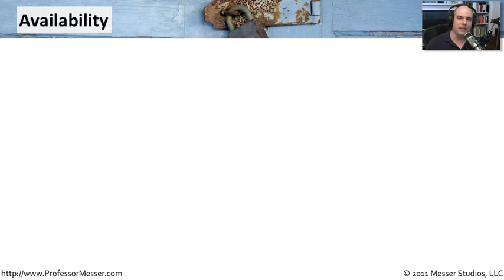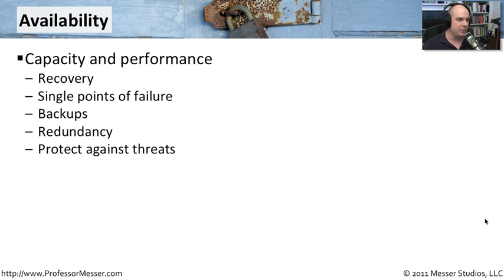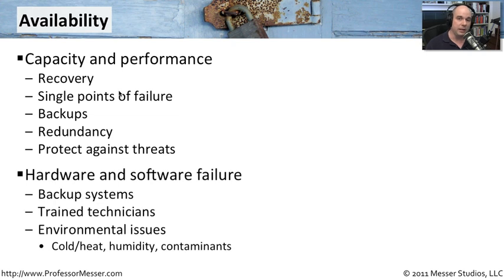When we think about availability, it involves a lot of different parts of the organization. There's an aspect of capacity and performance we have to keep in mind. As we talk about recovery, single points of failure, redundancy, and backing up our systems — that's a huge part of availability. If we lose any data, whether someone deletes it accidentally, we want to be sure we can get that data back. We also need redundancy in our software and backup systems, and our technicians need to be trained so that if there's ever a problem, they're able to take care of it. We also have to think about the environment — if you're in a data center, it has to have the right humidity and temperature to keep systems up and running.